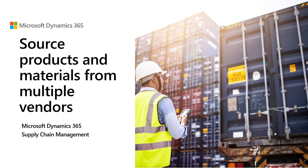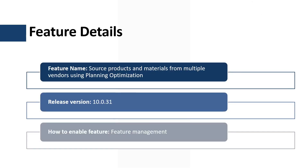Welcome to this video. In this tutorial, we're going to review how to source products and materials from multiple vendors using the planning optimization. This functionality has been available since version 10.0.31 and it's managed by the Feature Management Workspace.